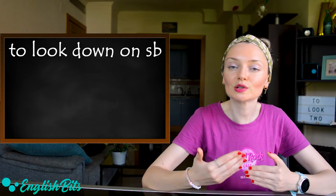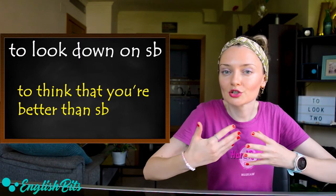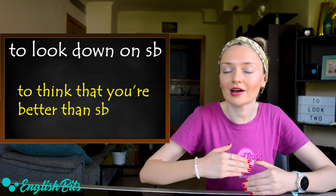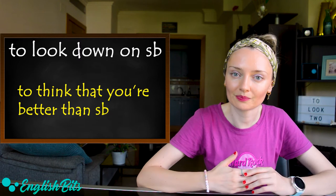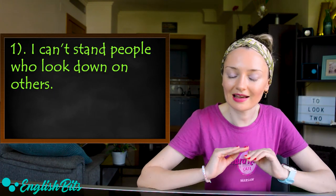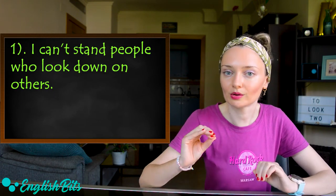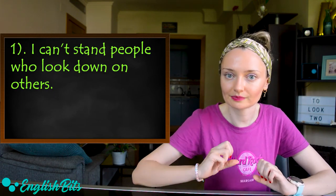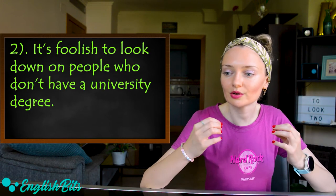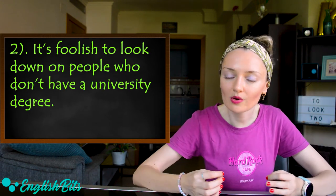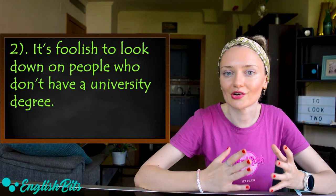Number six: to look down on someone. It means to think that you're better than someone. First example: I can't stand people who look down on others. And one more example: it's foolish to look down on people who don't have a university degree.